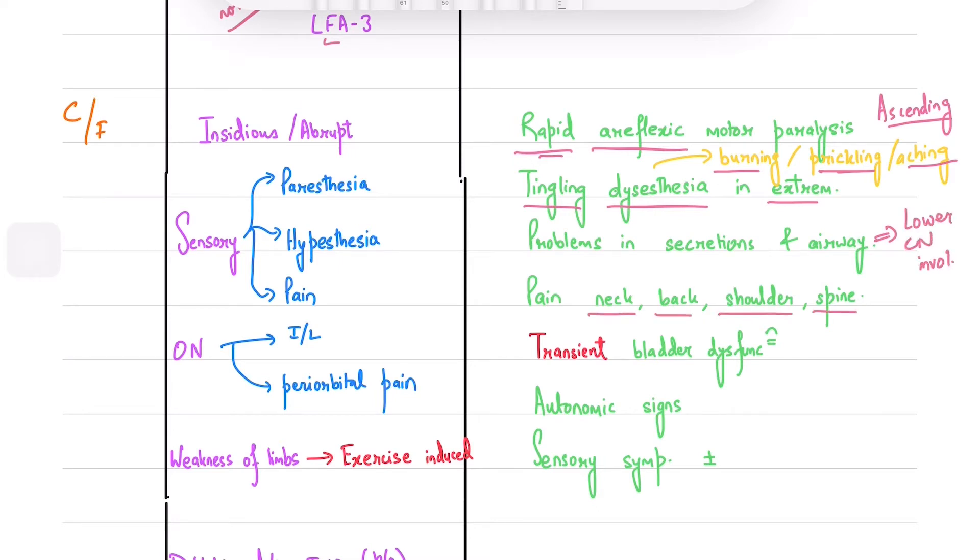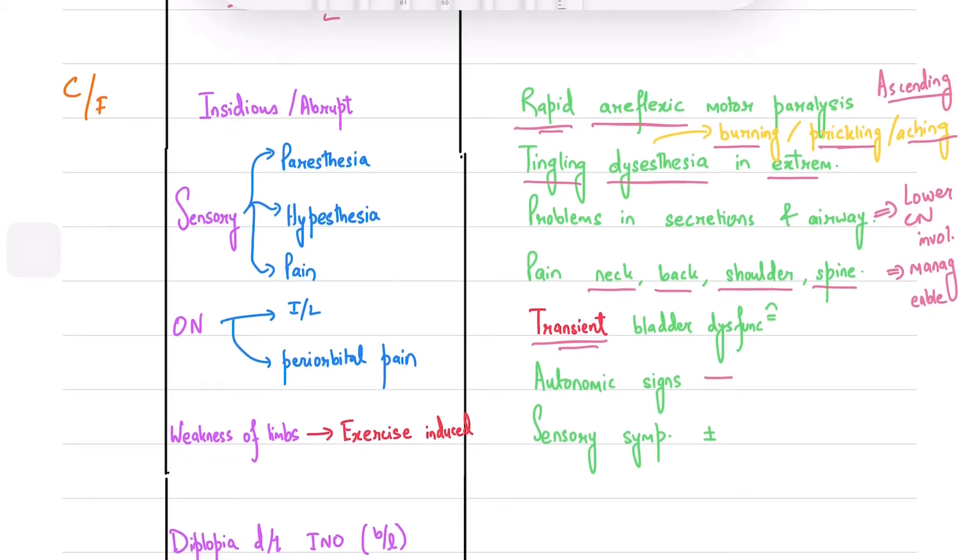Pain in the neck, back, shoulder, and spine is also seen in 50% of the patients. Bladder dysfunction is only transient and a different diagnosis should be considered if present as a prominent sign at an early stage. Autonomic signs like BP fluctuations, postural hypotension, and dysrhythmia will be seen. Sensory symptoms may be present or absent.